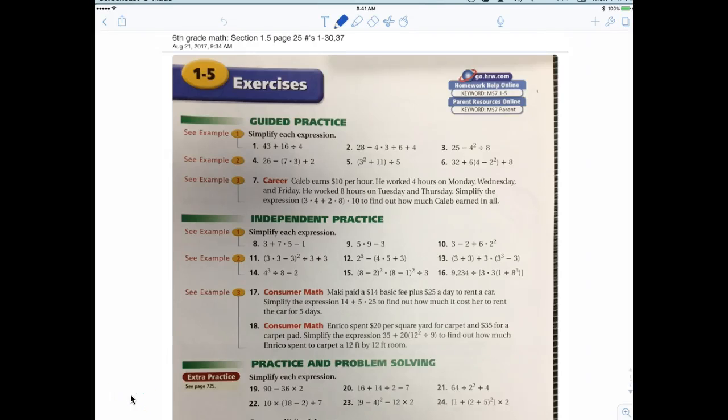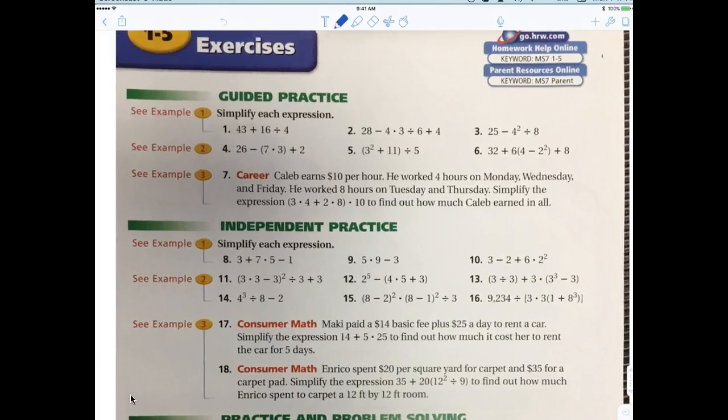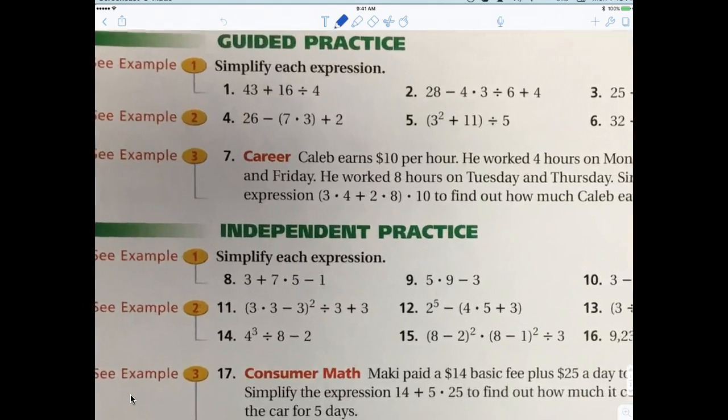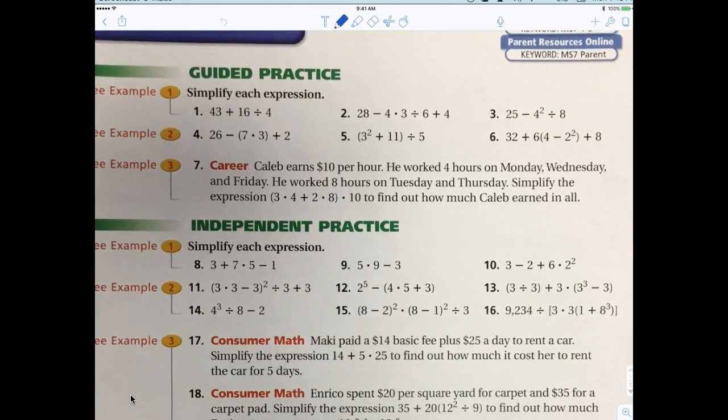All right, so again, today we're doing section 1.5, and we're doing 1 through 30 and 37. I'm going to work with you probably the evens, but the first thing I'm going to do is I'm going to work 1 through 7 just to make sure you have a good idea, and then we're going from there. Yes, it's 1 through 30 and 37.